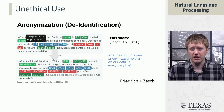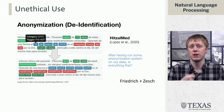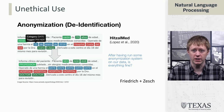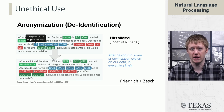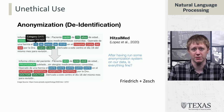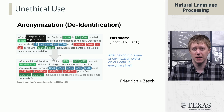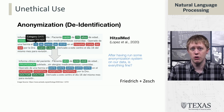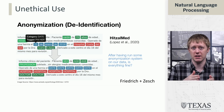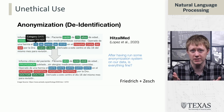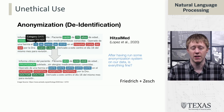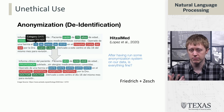A related issue is authorship attribution: if we have text written by an anonymous author, can we figure out who wrote it? This is actually a very old application of NLP, with people having looked at it with respect to Shakespeare and the Federalist Papers. But of course, trying to figure out who is writing things posted by some anonymous account online is a significant social issue.